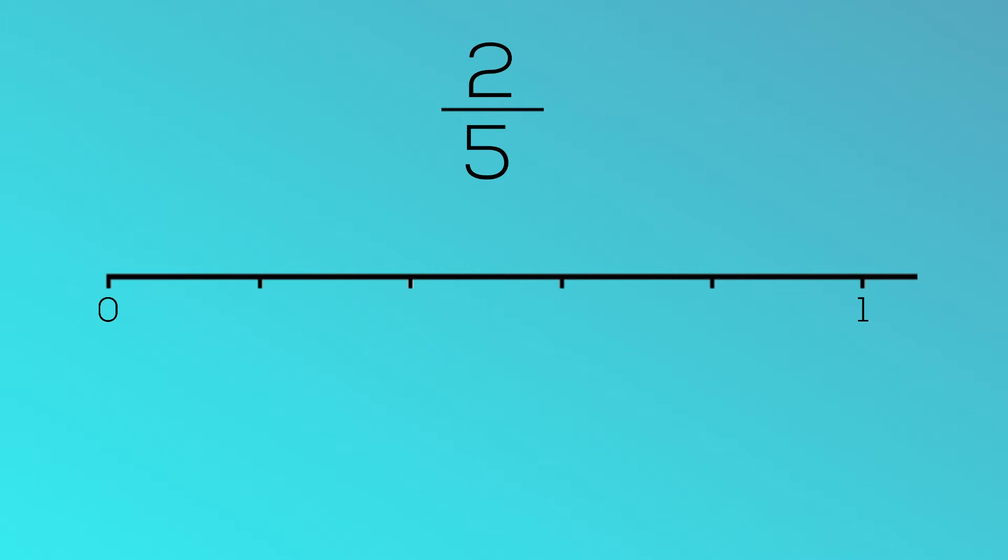Now, our numerator tells us that we have two-fifths. Let's count along. One-fifth, two-fifths. We have found two-fifths on the number line.